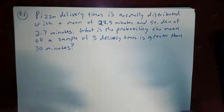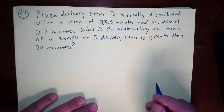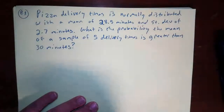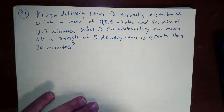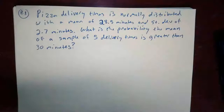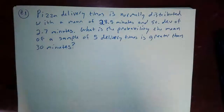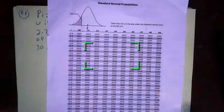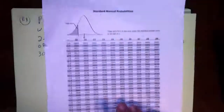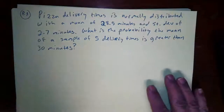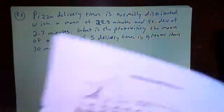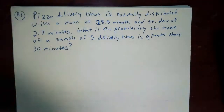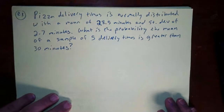Let's do some examples of problems, but as we do them let's think about what we just learned, especially about the central limit theorem and when we can assume the distribution is normal or not. Whenever we use the z-table to find a probability, we are assuming that the distribution we are using is normally distributed. Otherwise these probabilities wouldn't be accurate.